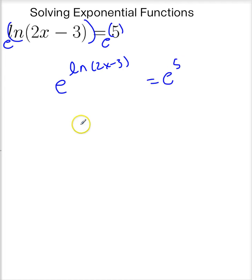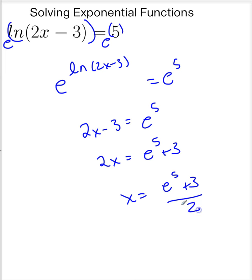These are inverses. So this is 2x minus 3 is equal to e to the 5th. So 2x is e to the 5th plus 3, or x is e to the 5th plus 3 all over 2.